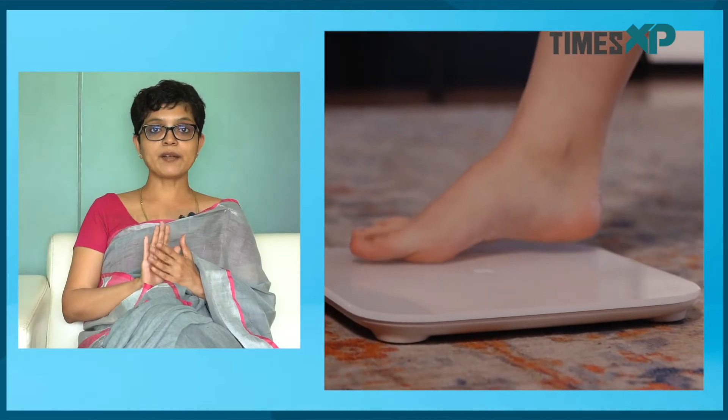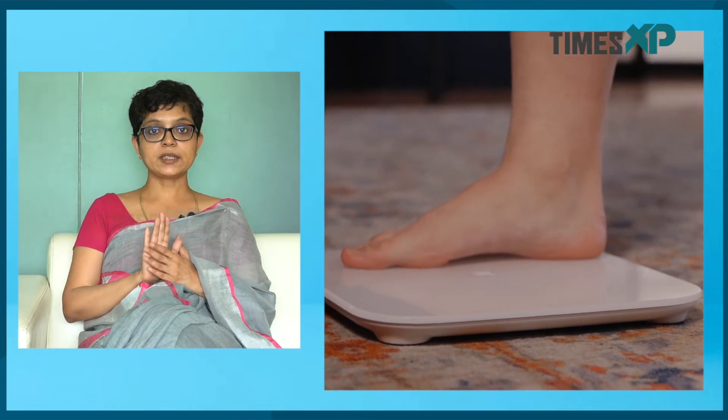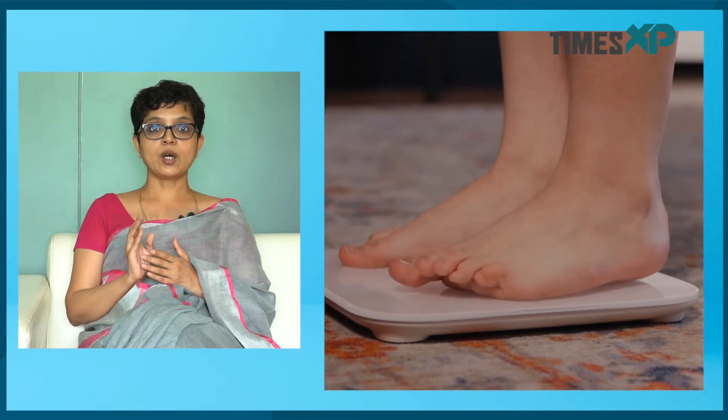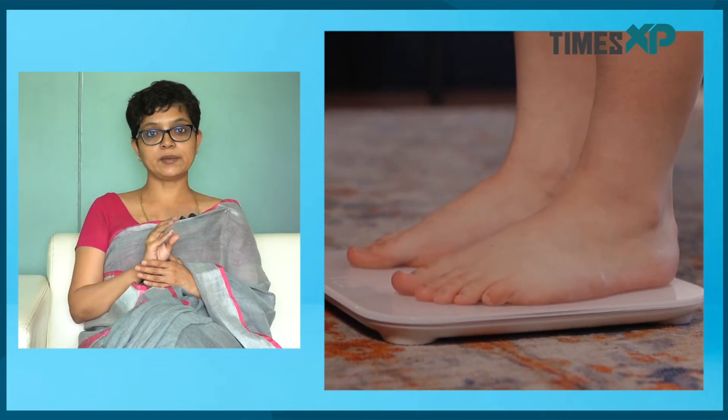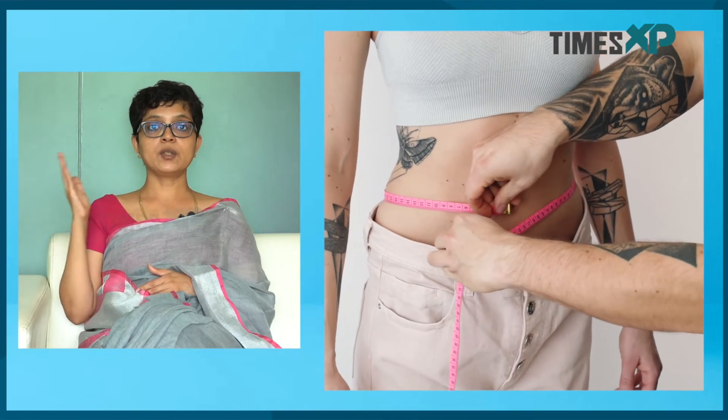Weight — you must have an optimal weight, which is a body mass index of roughly around 23 to 25. For each weight and height, the BMI is calculated in a separate way. Suffice it to say that if you are 5 feet 2 inches, you should not weigh more than 52 to 55 kilograms roughly. So if you are more than 60 kilograms, you need to reduce your weight.